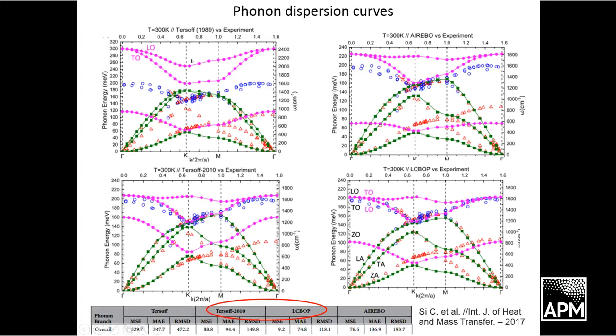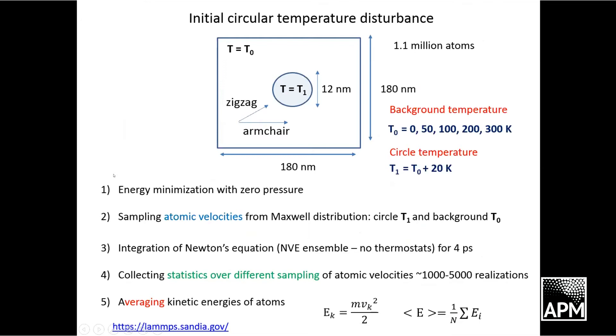I should mention that Tersoff potential from 1989 has the highest group velocity among all of the others.